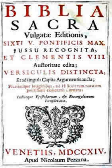The Clementine Vulgate contained in the appendix additional apocryphal books: the Prayer of Manasseh, three Esdras, and four Esdras. It also contained the Psalterium Gallicanum, as did the majority of the early editions of the Vulgate.